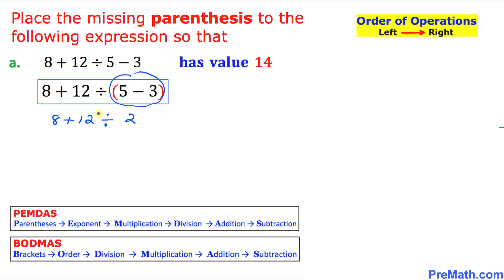The next thing is going to be this division part. So 8 plus 12 divided by 2 is 6. 8 plus 6 is 14. That means we got the right answer.